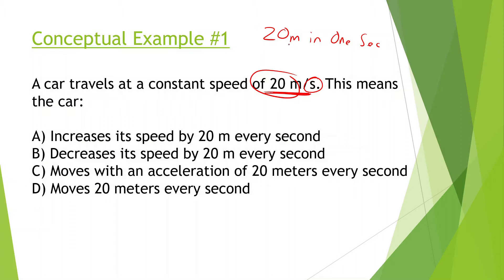Every second it has traveled 20 meters. We can see it moves 20 meters every second. If something's going 50 miles an hour, that means it travels 50 miles in one hour.